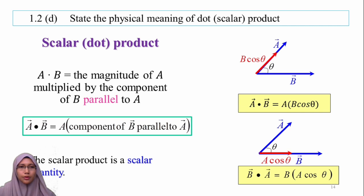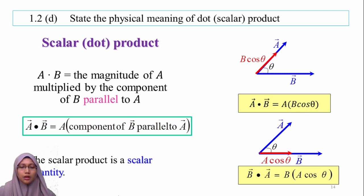The scalar product, or dot product, is written as A dot B. It is equal to the magnitude of A multiplied by the component of B parallel to A. The component of B parallel to A is equal to B cos theta. Hence, A dot B equals AB cos theta. The scalar product is a scalar quantity.